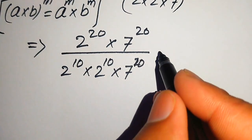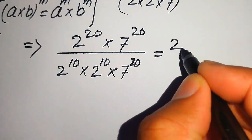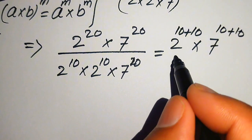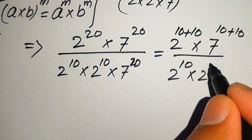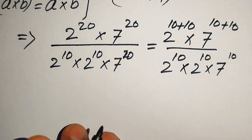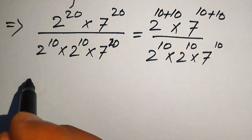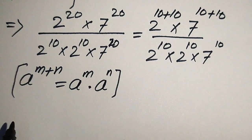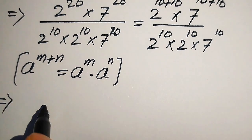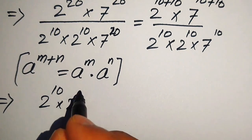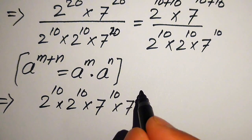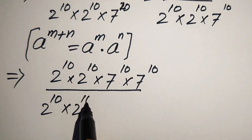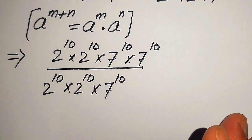In the next step, we focus on the exponents of the numerator terms. We rewrite 2^20 as 2^(10+10) and 7^20 as 7^(10+10), divided by 2^10 × 2^10 × 7^10. Then we apply the exponent law a^(m+n) = a^m × a^n, expanding the numerator to 2^10 × 2^10 × 7^10 × 7^10, divided by 2^10 × 2^10 × 7^10.